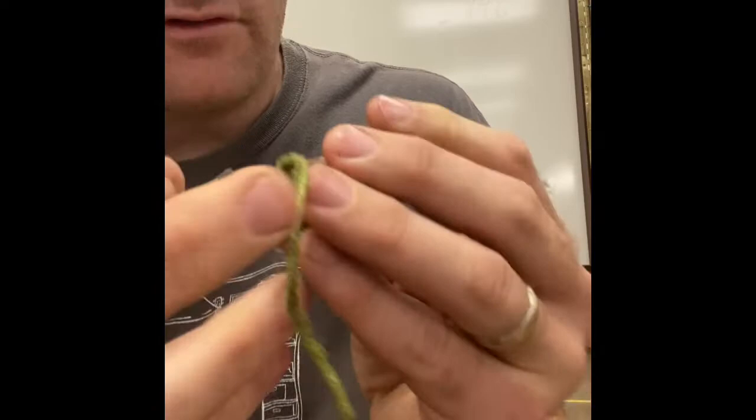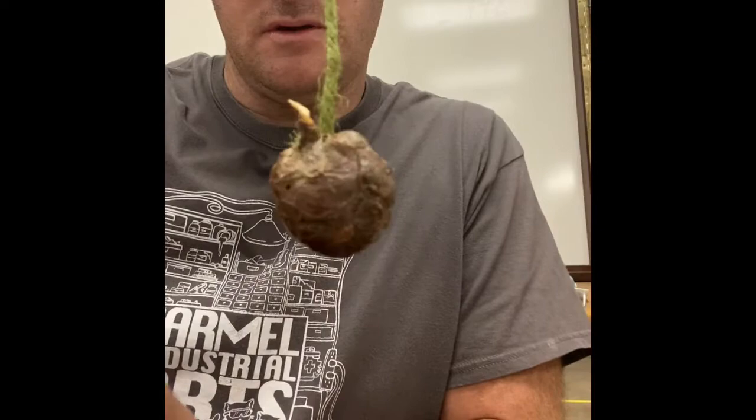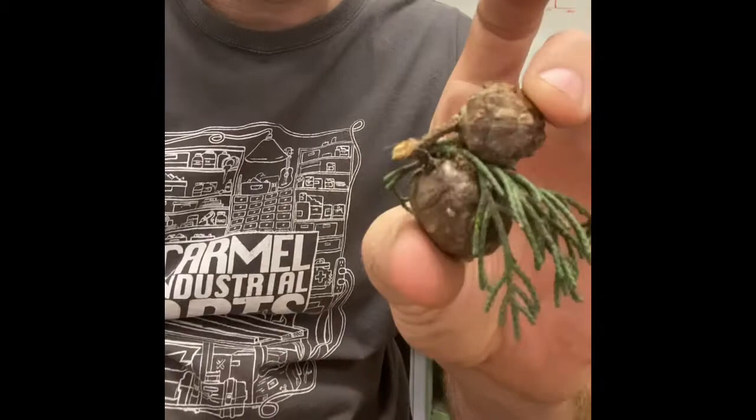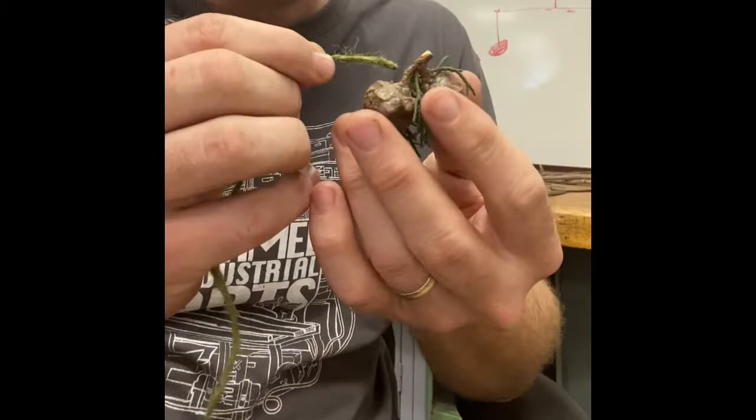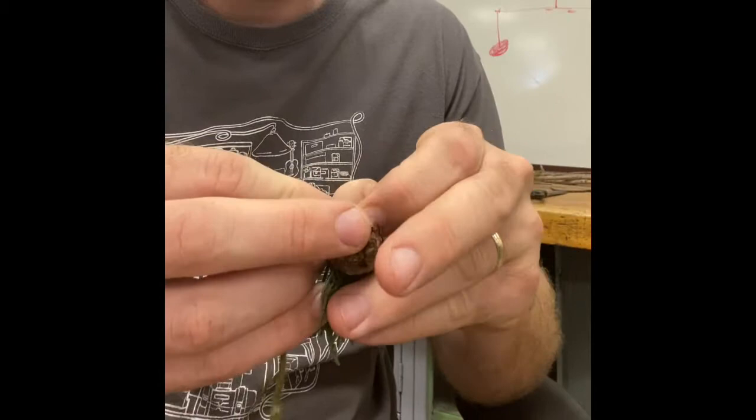What you can also do is if you find pine cones that have branches on them, such as this, I'm gonna take this here and thread it through and just tie a knot. Then I'll put a little drop of glue on it and I can secure it that way.